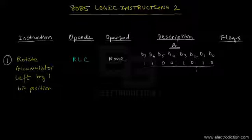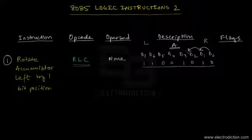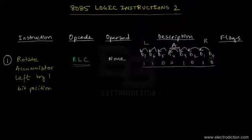When you execute the RLC instruction, each of the bits will move to the left by one bit position. As the arrow marks indicate, bit D0 becomes D1 — the bit present at D0 position moves to D1, the bit at D1 moves to D2, and it goes on throughout all 8 bits contained in the accumulator.